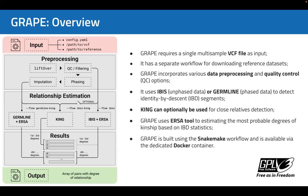CREAP uses IBIS as a main tool for detection of identity-by-descent, called IBD segments, that can work with unphased data. For those who already have phased data, CREAP provides an option to run the GERMLINE tool for the same purpose. After performing the detection of IBD segments, CREAP uses the URSA algorithm of maximum likelihood estimation of recent shared ancestry to calculate the most probable degrees of kinship. CREAP is built using the SnakeMake workflow and is available via a dedicated Docker container.